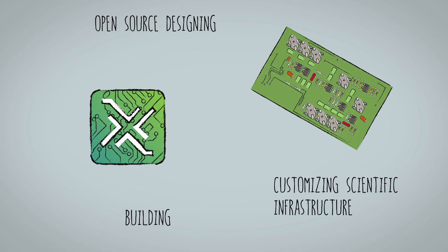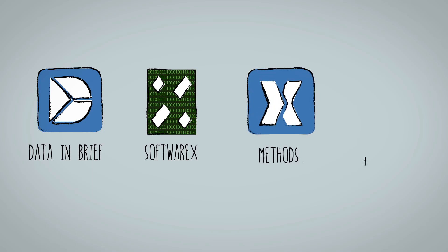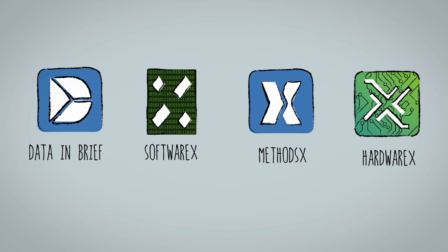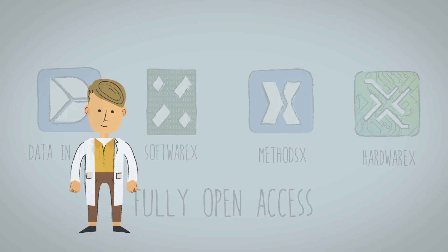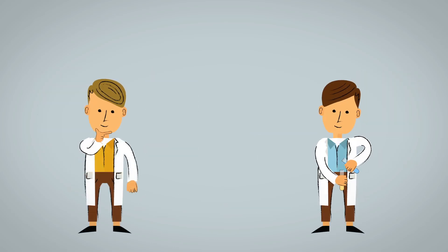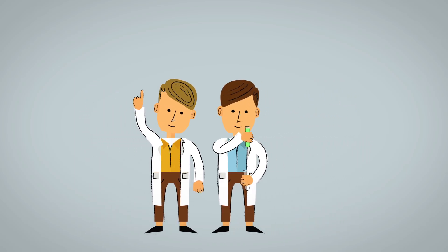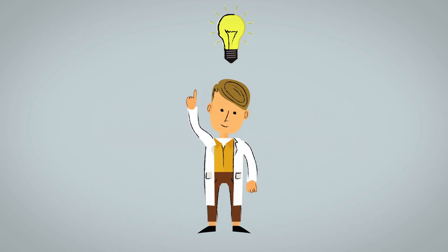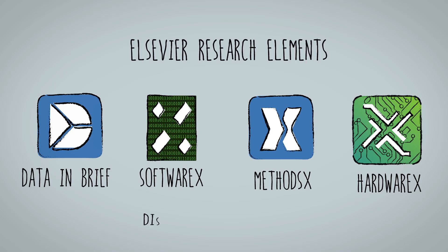The journals Data in Brief, SoftwareX, MethodsX, and HardwareX are fully open access, so articles are available to everyone. Whether you're making major breakthroughs, incremental steps, or something in between, consider supporting other researchers by publishing your data, software, methods, and materials with journals from the Elsevier Research Elements program.